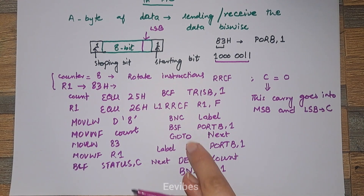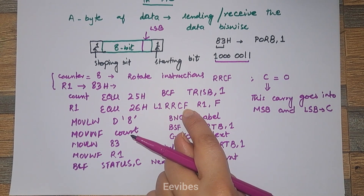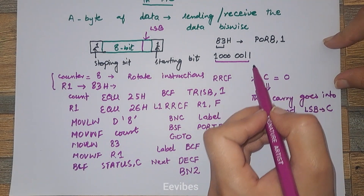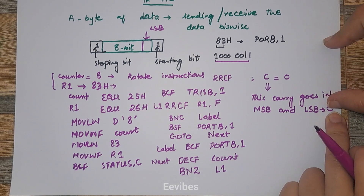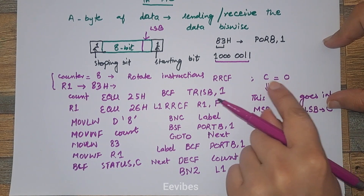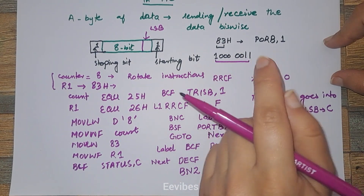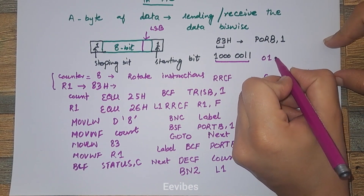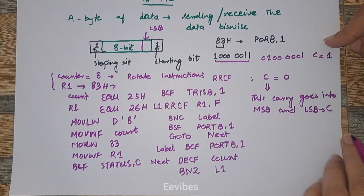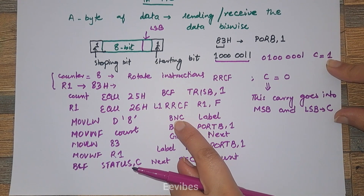Let's walk through what happens. First we rotate the contents of R1 — the value is 83 hex (1000 0011). The carry is initially zero, which goes into the MSB. After rotation you get 0100 0001, and the LSB (1) is copied into the carry flag, making carry equal to 1.